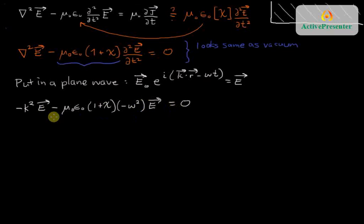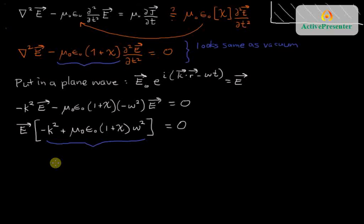We'll just copy this stuff over, minus μ₀ε₀(1 + χ). We know that the second time derivative is going to bring out a factor of minus ω² E equals zero. So when we analyze this, we've got an electric field. We can factor out the electric field. And then what's left inside, so we've got minus k² from here, and from this term we've got plus μ₀ε₀(1 + χ)ω².